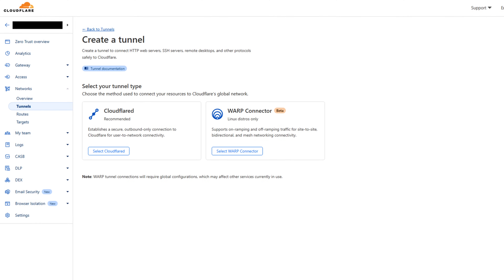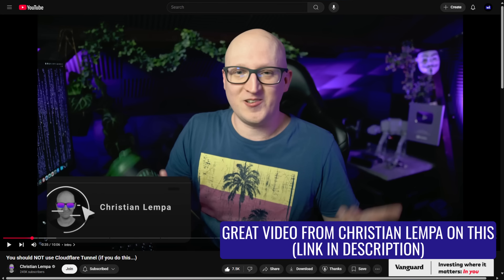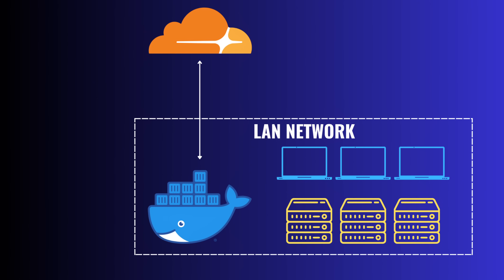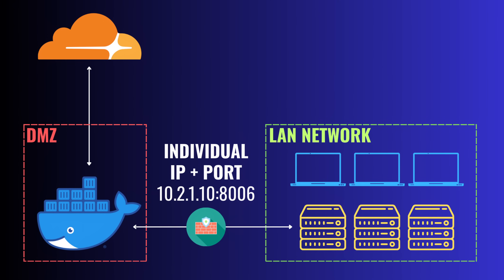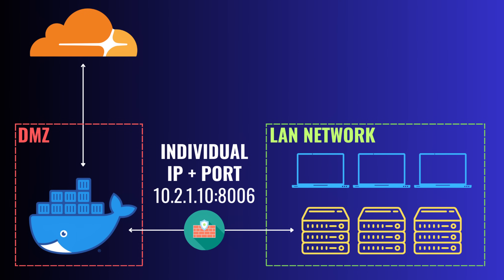Secure remote access is one of the most debated topics, but a few years ago Cloudflare made it a lot easier for the average user by implementing a free zero-trust network where you can configure Cloudflare tunnels with no port forwarding and a pretty easy setup process. The problem is there are more and less secure ways of configuring a Cloudflare tunnel. So in this tutorial, we're going to look at how to configure Cloudflare tunnels securely utilizing a unified cloud gateway and isolated VLAN on a DMZ.